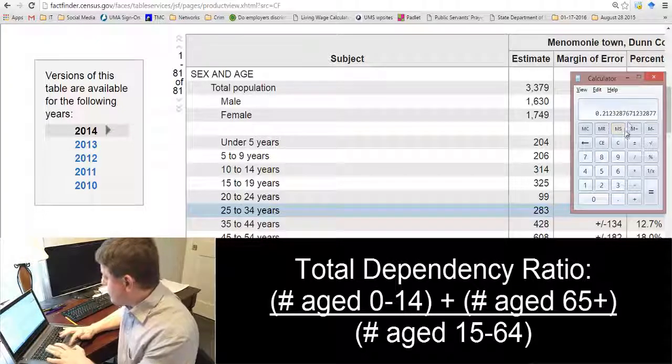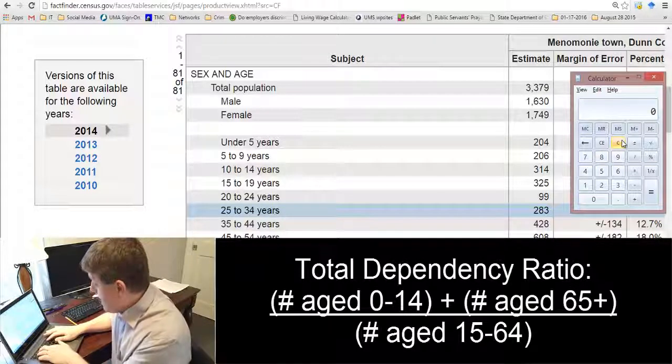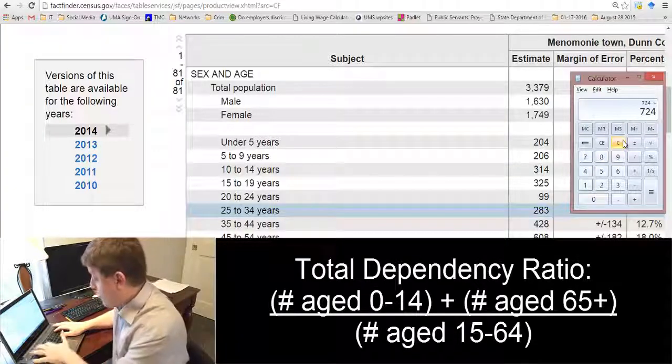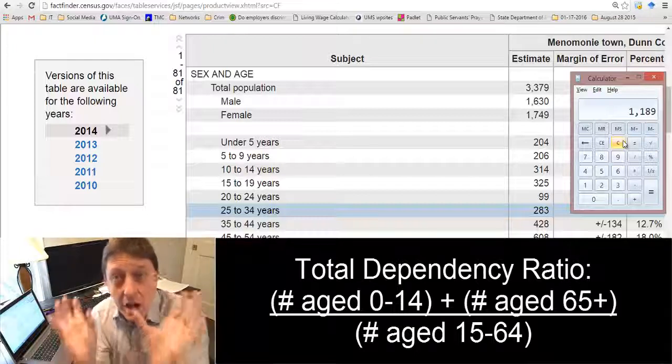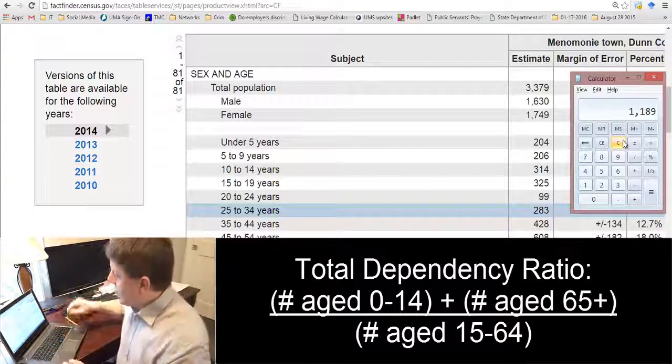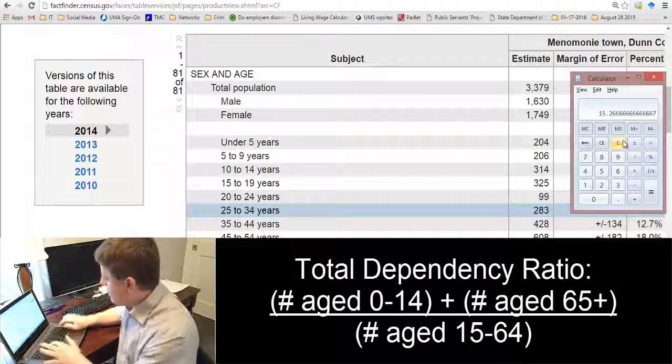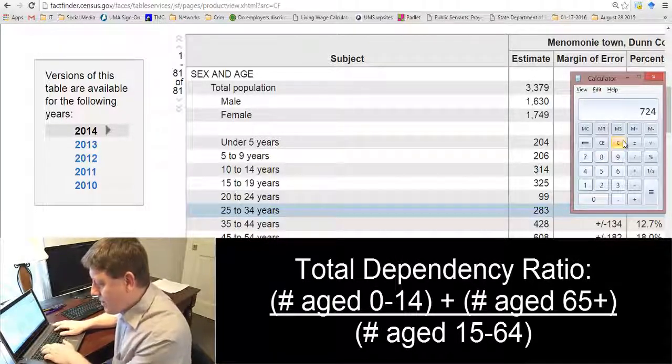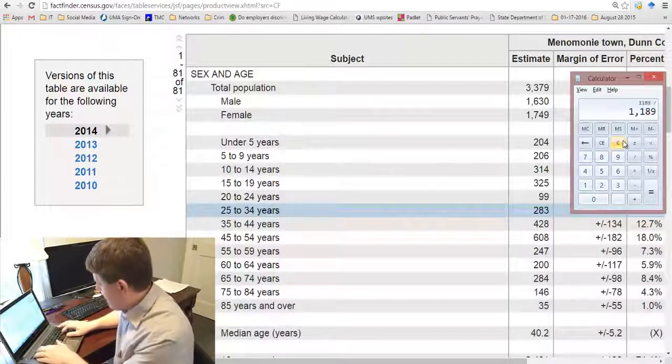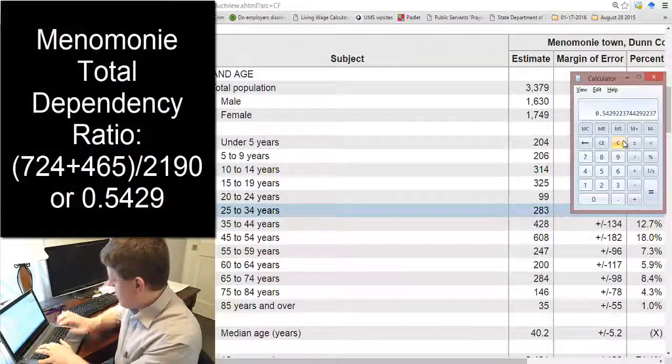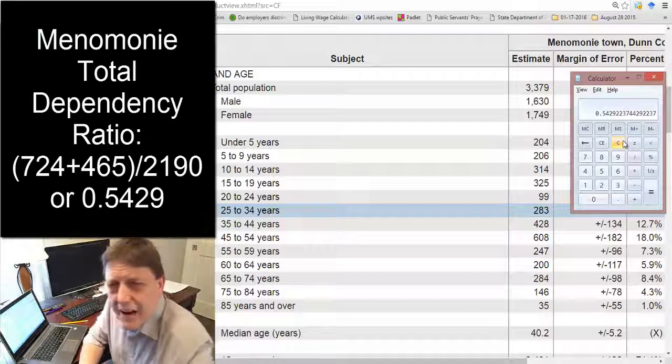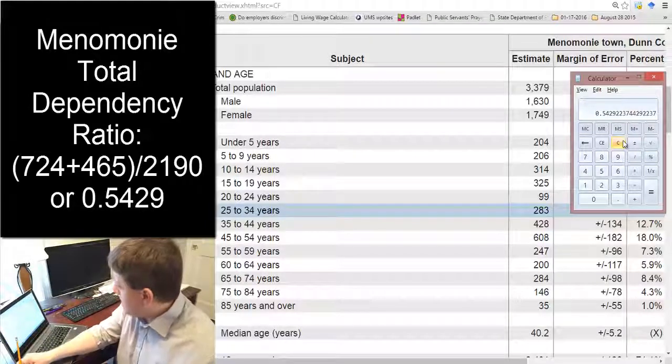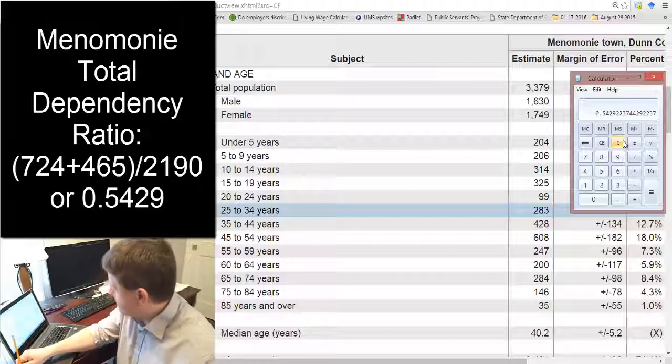Well, we already have all of those numbers. We know that for those 0 to 14 in Menominee, we have 724. We know that for those who are of retirement age 65 plus we have 465. So now I have 1,189 of those people of non-working age. And I can divide that by those aged 15 to 64. Excuse me. I seem to have made a mistake, so I'm going to do that again. 724 plus 465. Okay. And now I'm going to divide by 2,190. There we go. That makes sense. I must have made an arithmetic error because I got a number that was really big. My number here, the total dependency ratio, is 0.5429.